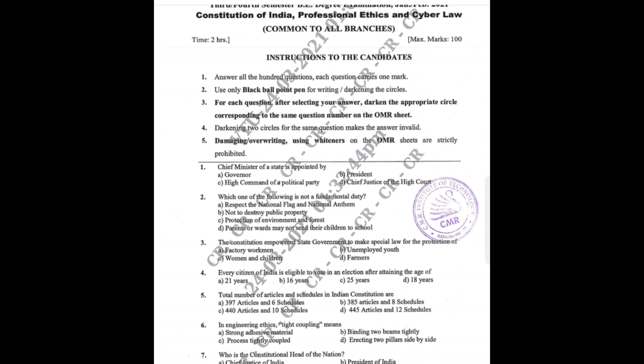The questions will come like this only, so you have to refer at least four to five question papers to cover this particular subject. As you already know, VTU sometimes sets unexpected papers — as you have already observed in the previous English paper, it was totally different from the model question paper. So you don't need to depend only on the model question papers.